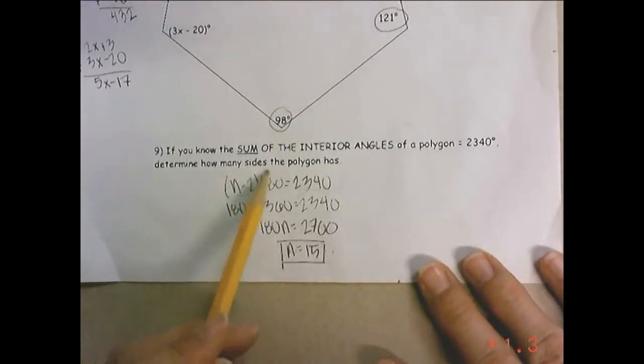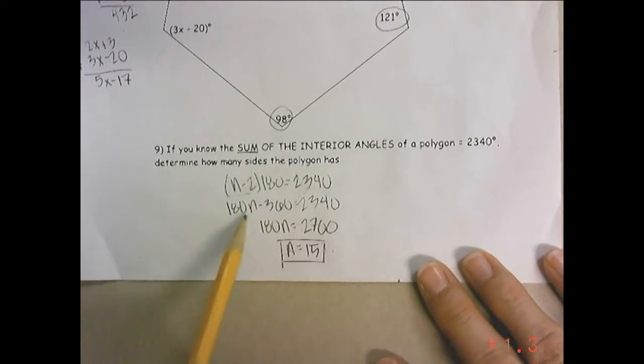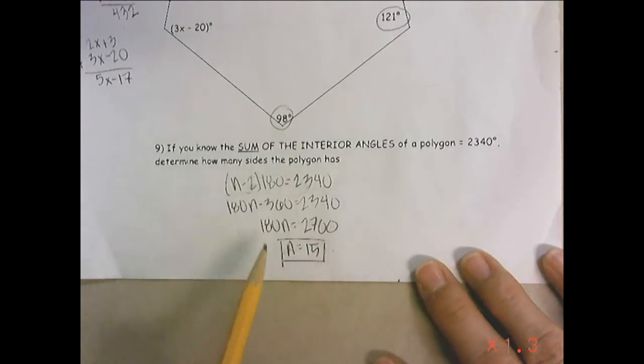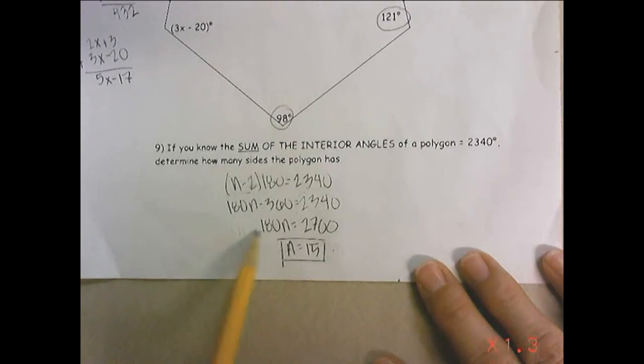Well, I'm going to distribute my 180, and end up with 180n minus 360 equals 2340. I'm going to add 360, add 360, 180n equals 2700. Now, divide by 180, and divide by 180, and you get n equals 15.